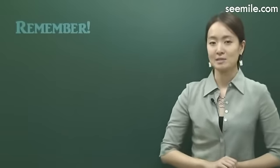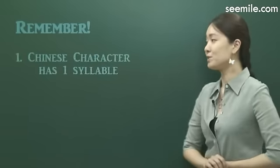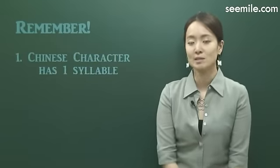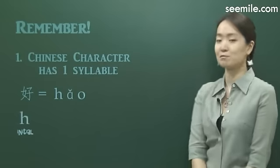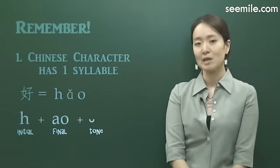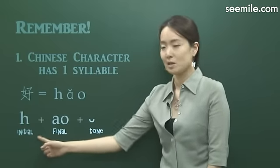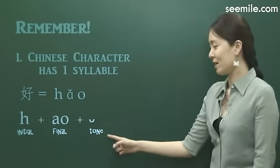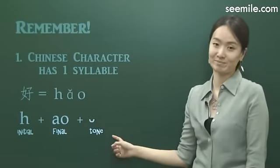There are a couple of things you have to remember about pinyin. First of all, each Chinese character has one syllable, and that syllable consists of three parts: initial, final, and tone. Initial is the consonant, final is the vowel, and this little mark is the tone. We are going to talk about tone very soon.